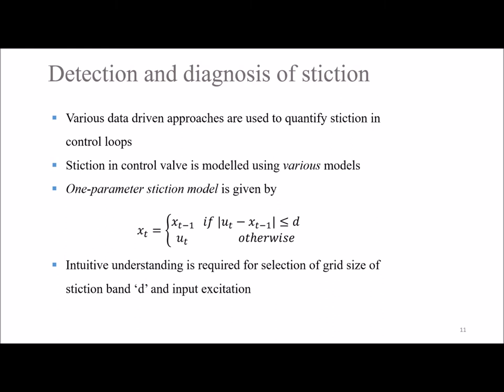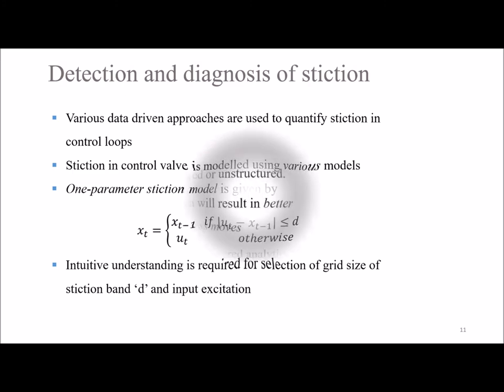Various data-driven approaches are used to qualitatively and quantitatively identify stiction in a control loop. Stiction in a control valve is modeled using various models. The one-parameter stiction model is shown here, where D is the stiction parameter. An intuitive understanding is required to choose the grid size of stiction parameter D when identifying stiction using the one-parameter model, and proper input exercise is needed when generating simulated data.